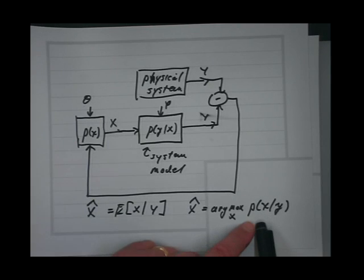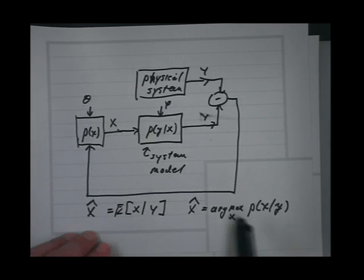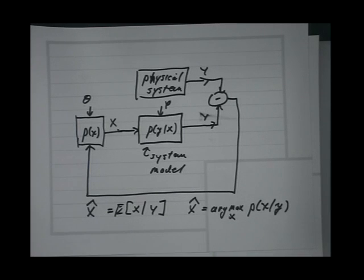It gives you 95% of the way there. It's a lot better than doing something completely ad hoc. If they're Gaussian, the two cases are the same. But in practice, for real data, images are typically not Gaussian — so the Gaussian assumption is not a good one.